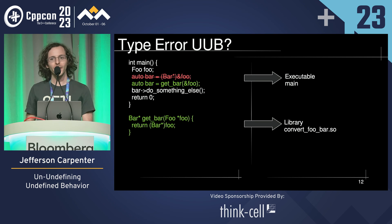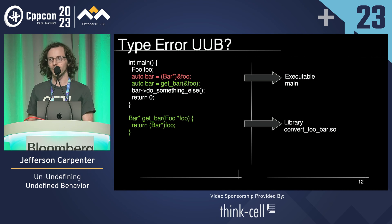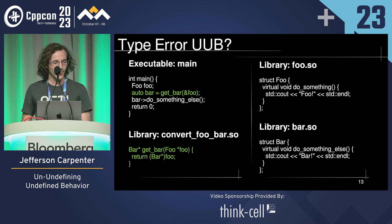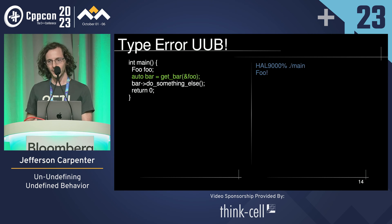But there are other things we can do — like factor out the cast and put it into a library. When the library is compiled, the cast is fine. And when main is compiled, for all the compiler knows, get_bar could return a bar object. After putting foo and bar into libraries for good measure, we get foo. So we've un-undefined this behavior by setting up a situation where the compiler can't tell that it's UB.